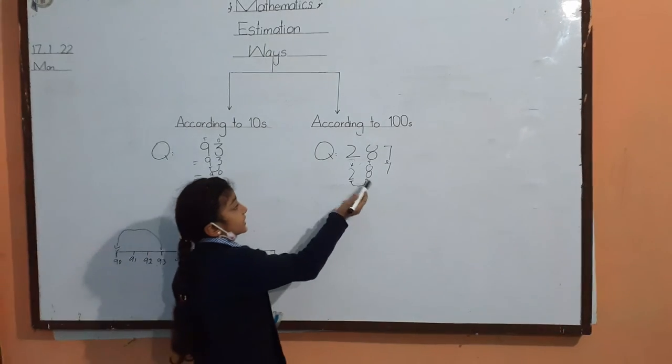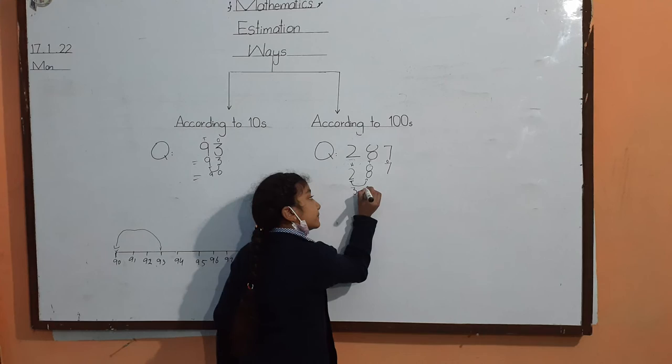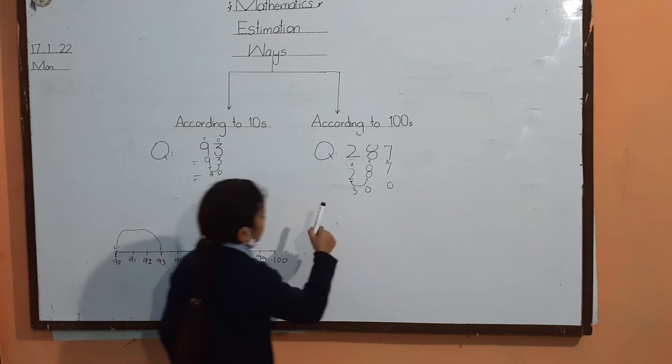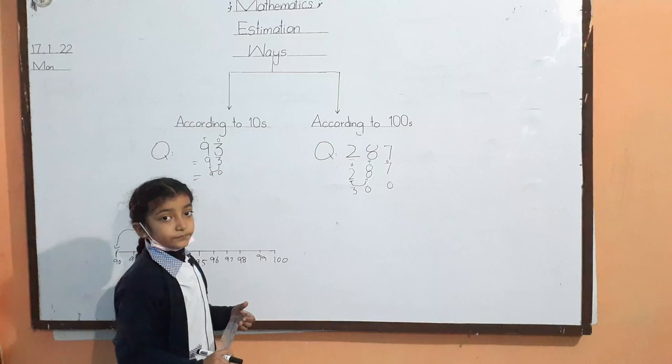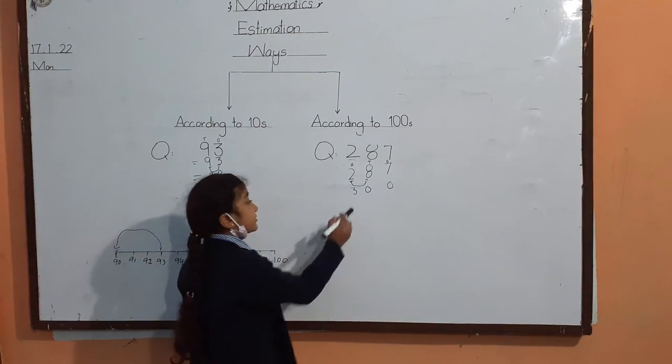We will add 1 to the 2 here. So this becomes 3. The estimated value of 287 is 300. Thanks.